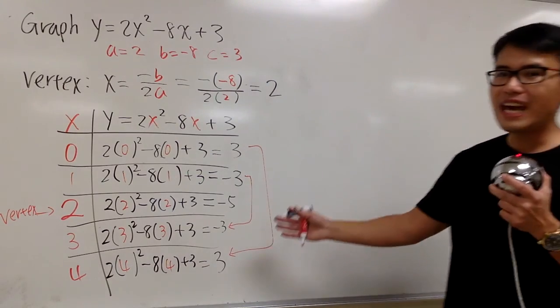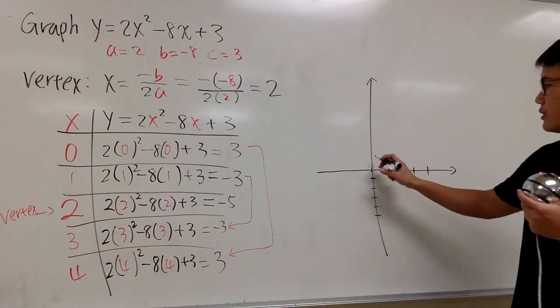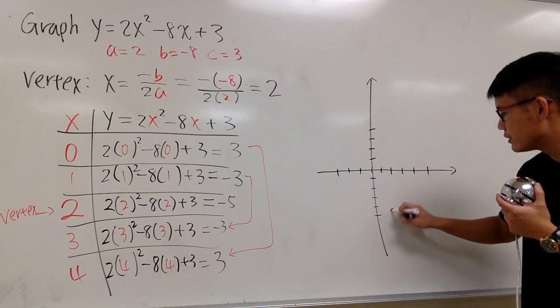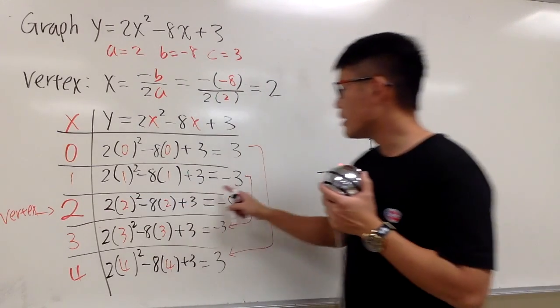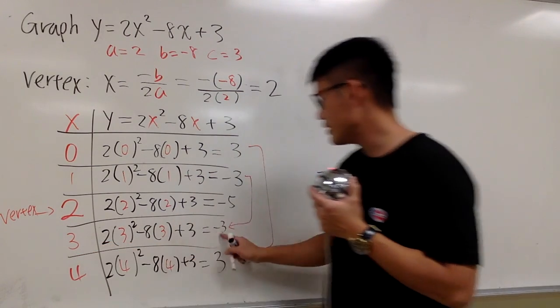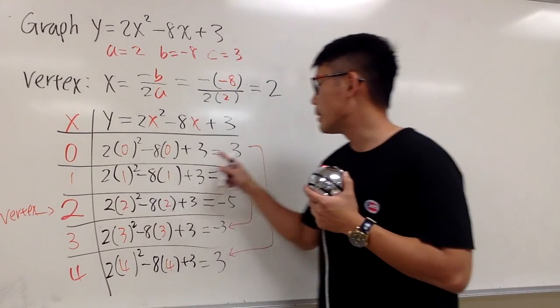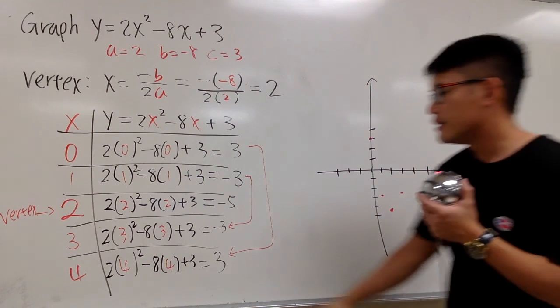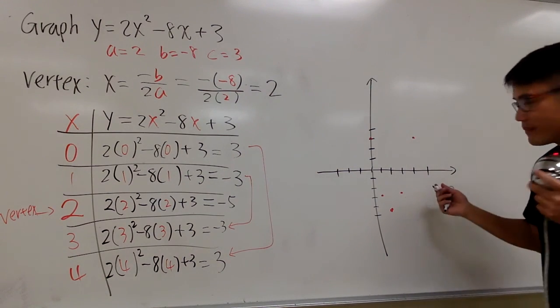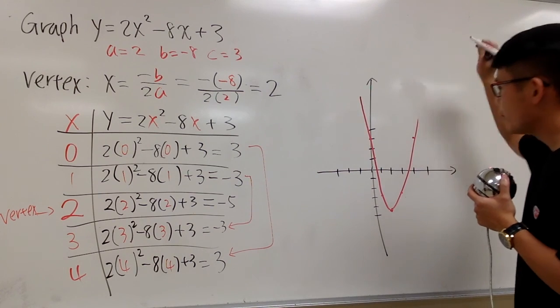And now, once you have this table, we are ready to go. So, we can just vertex first. 2 comma negative 5. 2 is right here for the x. And then, 1, 2, 3, 4, 5 down below, which is right here. And then, next, 1 comma negative 3. 1 is right here. Negative 3 is down here. So, we have this point. And we will also have 3 comma negative 3. 3 is right here. Go down. And we have 0 comma positive 3. 0 for x. Positive 3 right here. And 4 comma 3. So, we have 1, 2, 3, 4. And we go up to 3 right here. Okay. So, let's go ahead and connect the dots with a nice happy face parabola. And we are done.